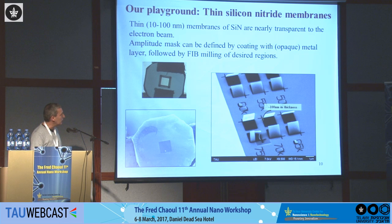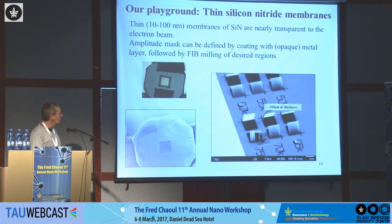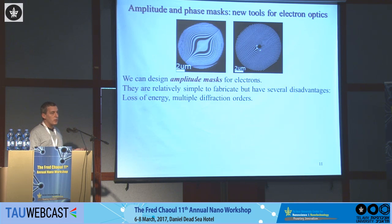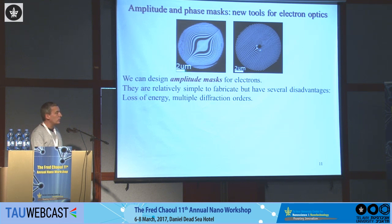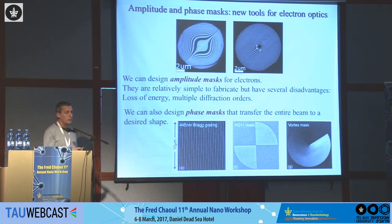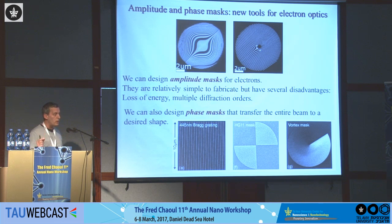Since we are in the nanocenter workshop, I can say these specific masks are made in the nanocenter, mainly thanks to focused ion beam milling. We get very thin silicon nitride films, anywhere between 30 and 100 nanometers thick, and mill them by focused ion beam. This can be either an amplitude mask or a phase mask. For an amplitude mask, we cover everything with a metal like gold, which is opaque for electrons, and then define openings. This is a mask that generates electron Airy beams; this one generates electron vortex beams.